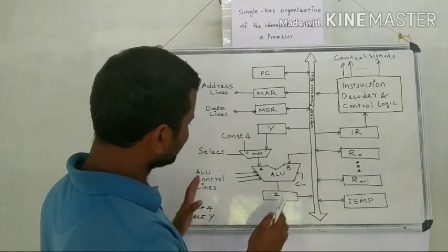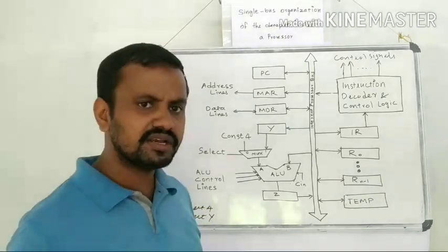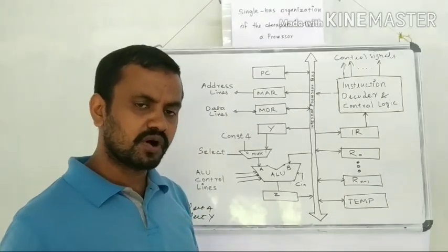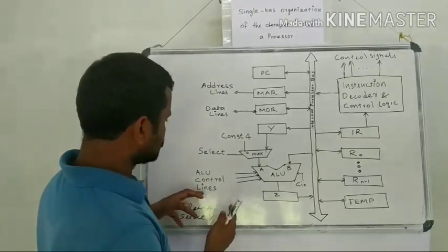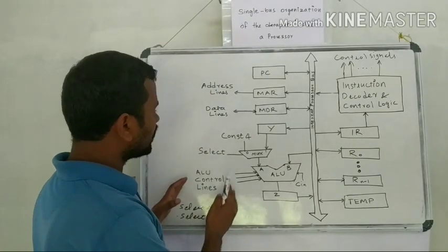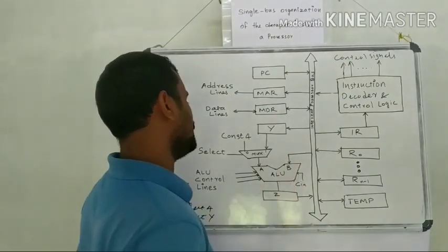Then another component is the ALU. ALU, as you know, is the arithmetic and logic unit. That will perform the arithmetic and logic operations. And corresponding to that, there are ALU control lines and these lines will decide which operation to be performed by the ALU.